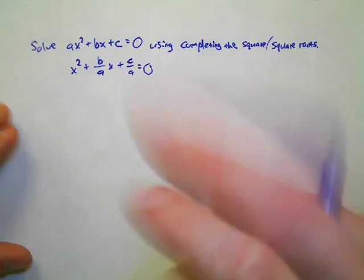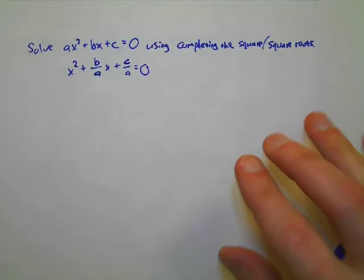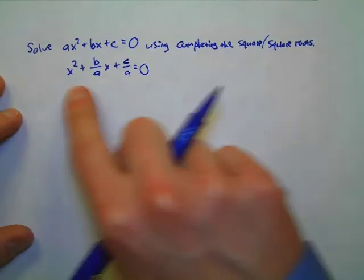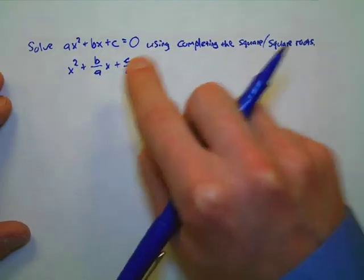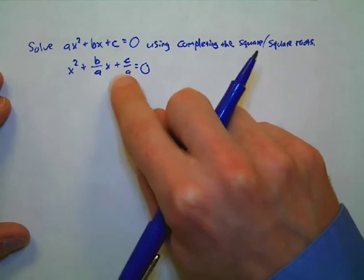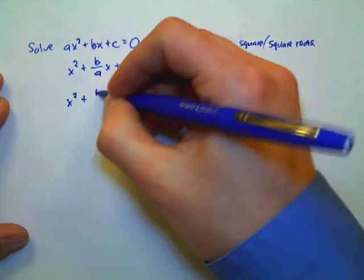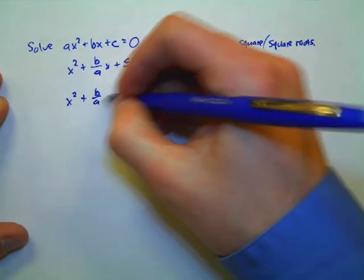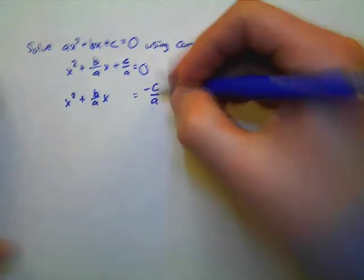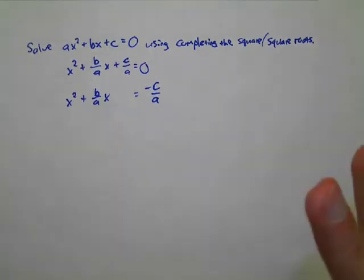What is the typical next thing that we do in the process of completing the square? We subtract the c/a from both sides, because we want to have no constant. So we'll have x² + (b/a)x, leave a blank, equals negative c/a. Now we are set up and ready to go to actually complete the square.